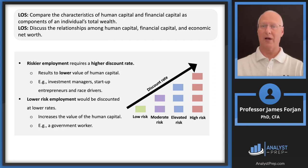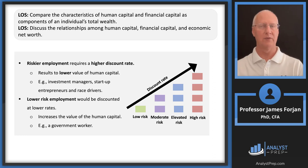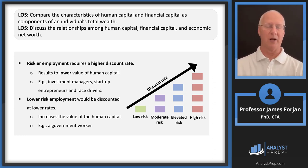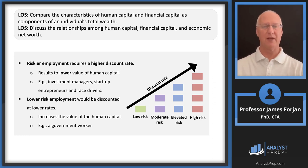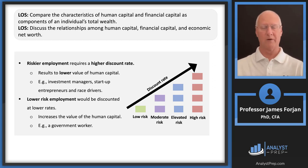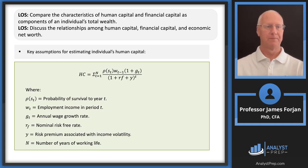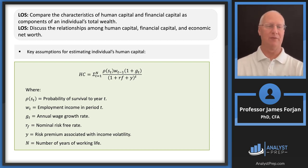Riskier employment requires a higher discount rate. Examples the Institute gives: investment managers, startup entrepreneurs, race car drivers — I'd add dentists due to high stress. Lower risk employment includes a government worker or a tenured college professor.